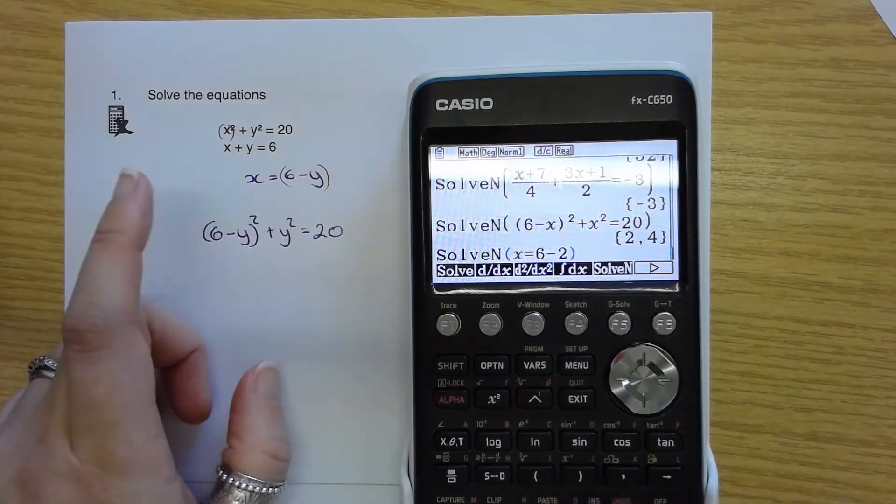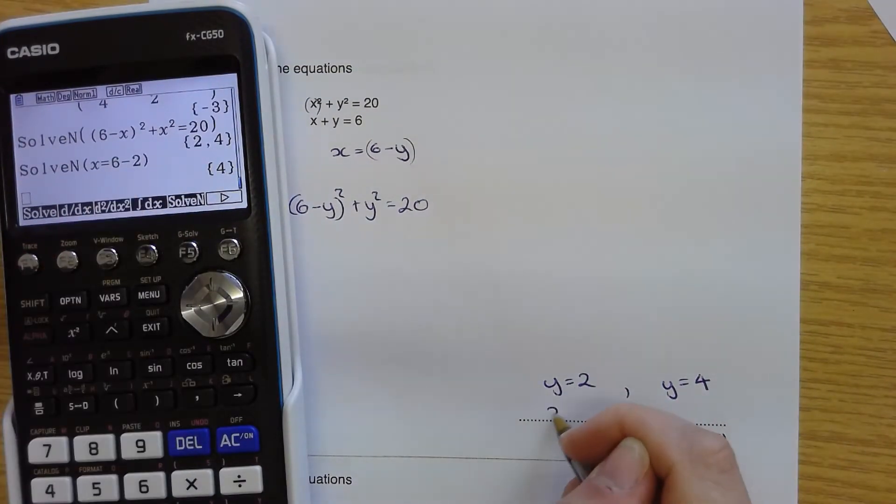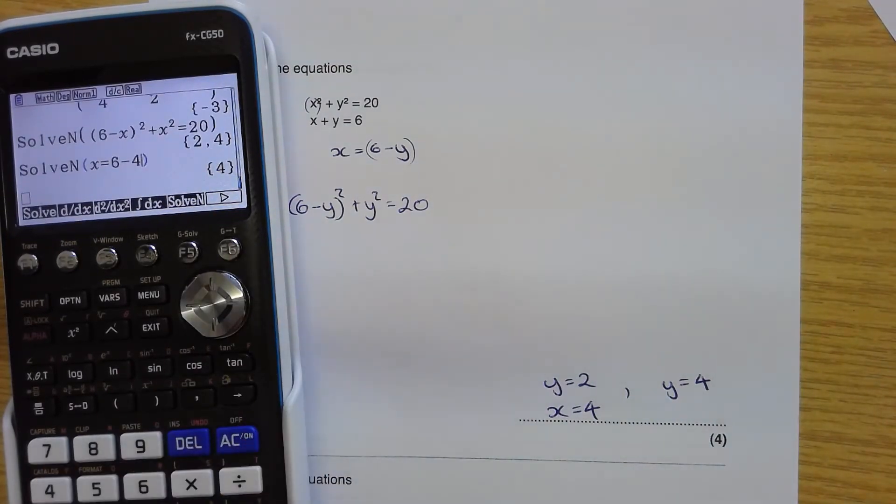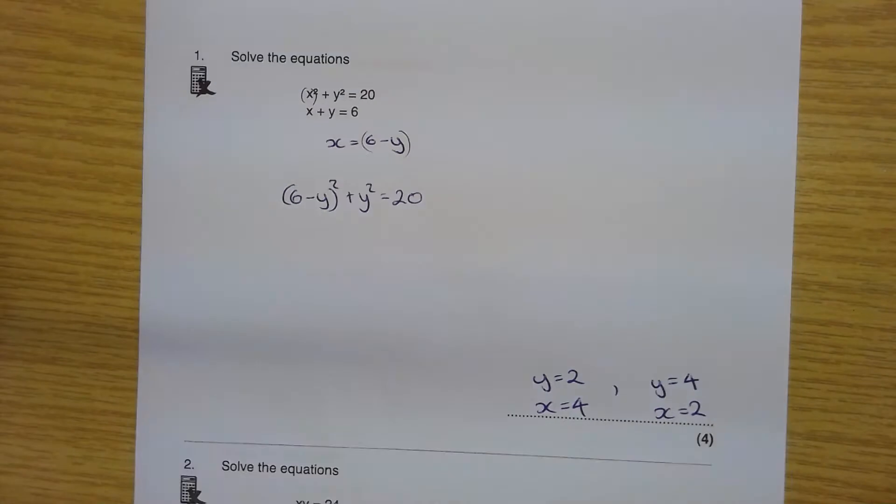So if x equals 6 take away y, I could use my solve N here again. x equals 6 subtract 2, close bracket, exit. That gives me the answer of 4. So when y is 2, x is 4. And I can even go back in and just replace that with the value 4. And so when y is 4, x is 2. So there are my two sets of solutions. If you have one equation linear and one non-linear or even both non-linear, with solving simultaneous equations using substitution, I use the solve N facility.